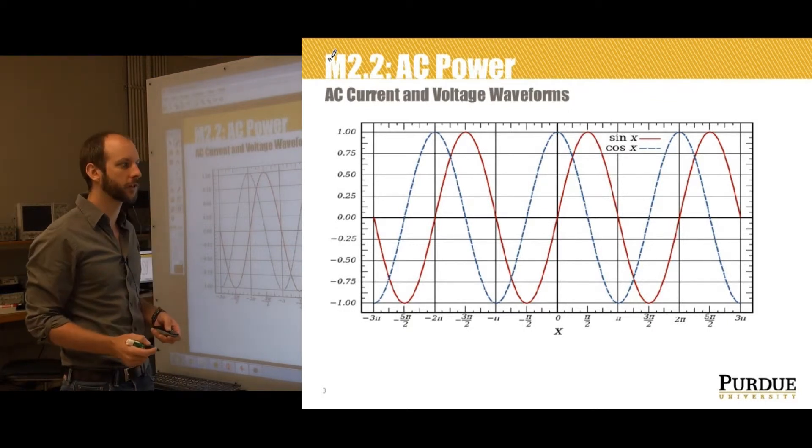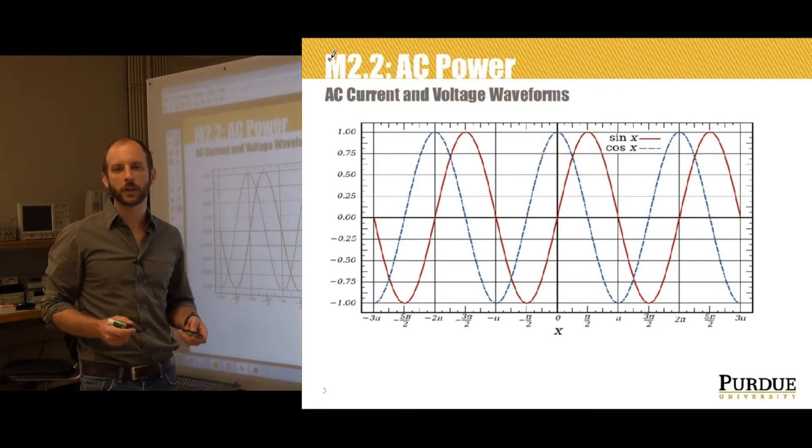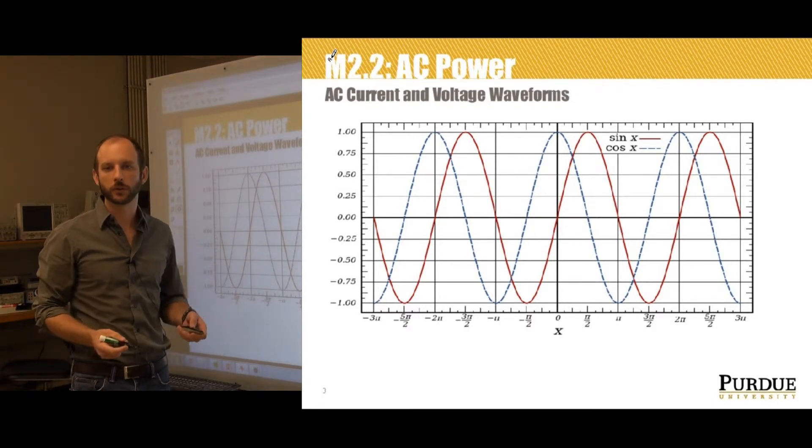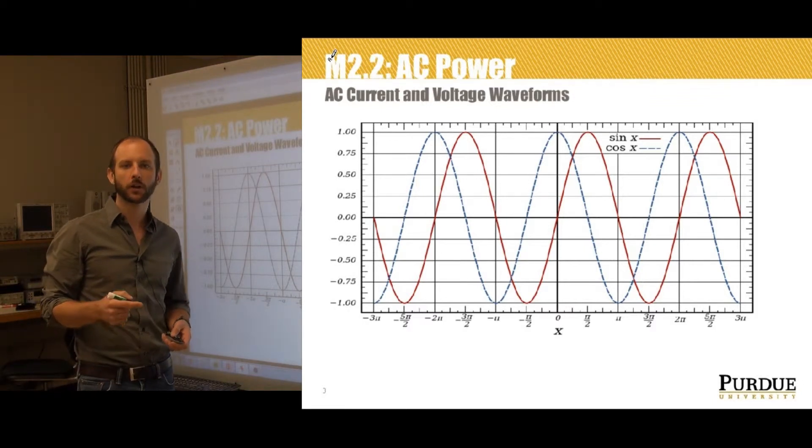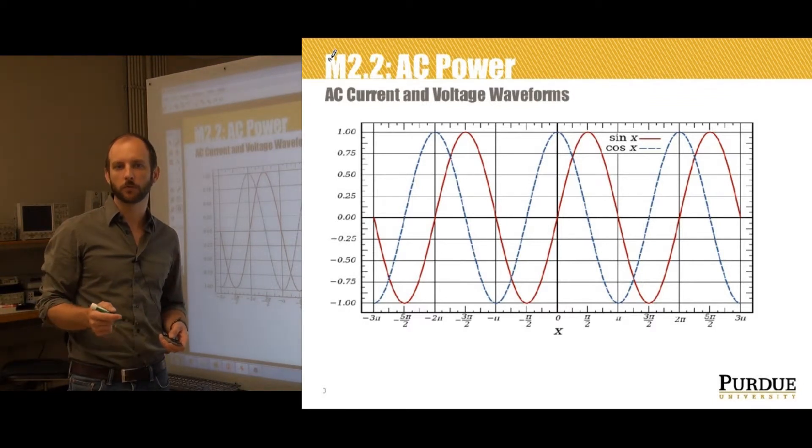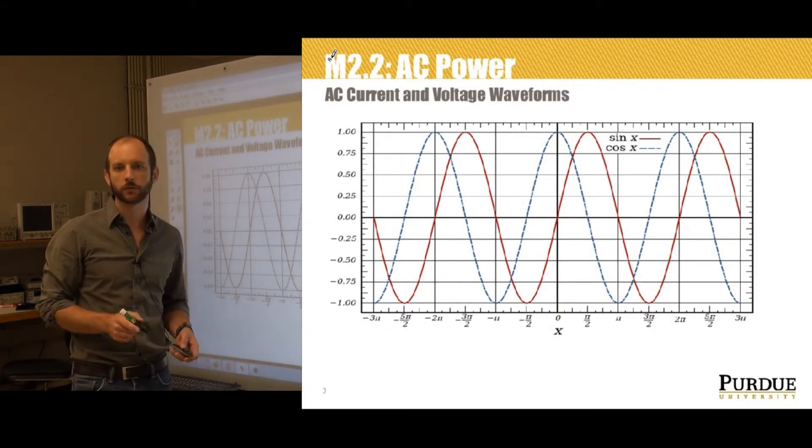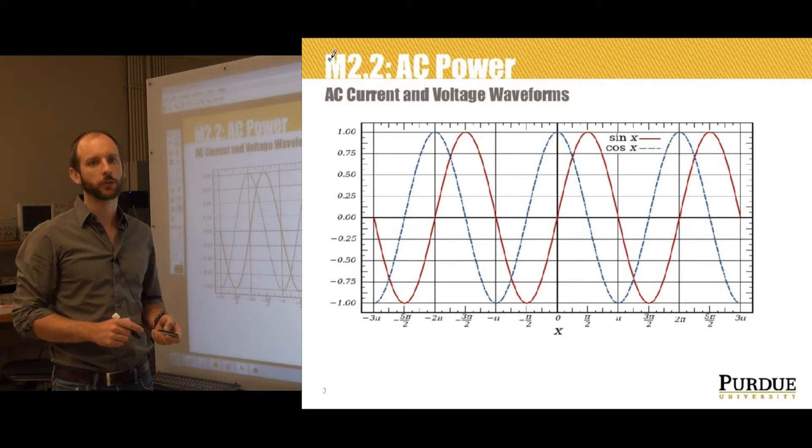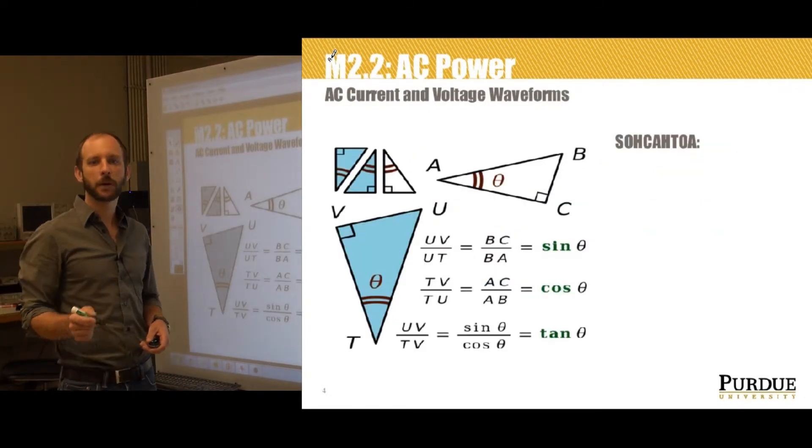However, by definition, trigonometric functions sine, cosine, and tangent have to have inputs that are angles, either in degrees or in radians. Therefore, in an AC system, time will appear not in the accustomed units of seconds or minutes, but instead in terms of the angle of one of these sine or cosine functions, and we'll spend a lot of time going over that in this lecture series.